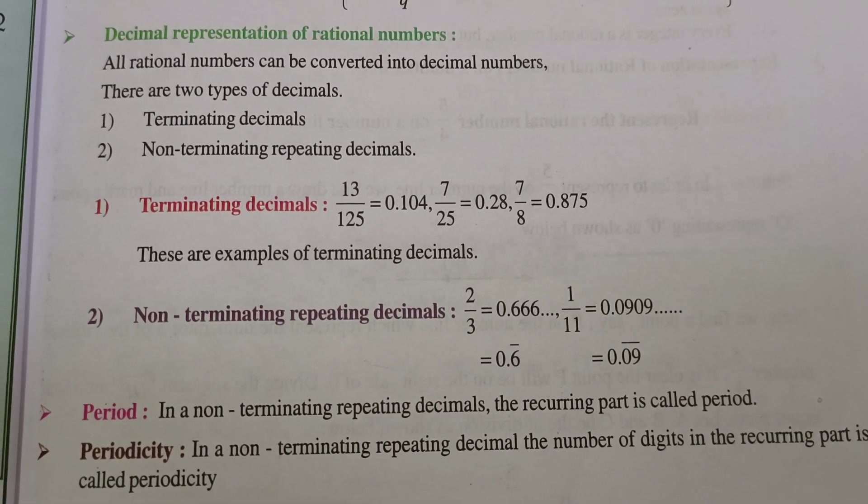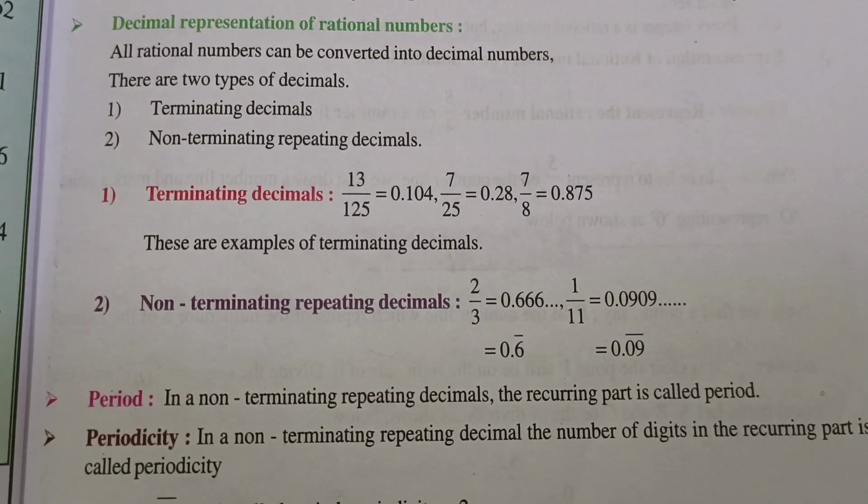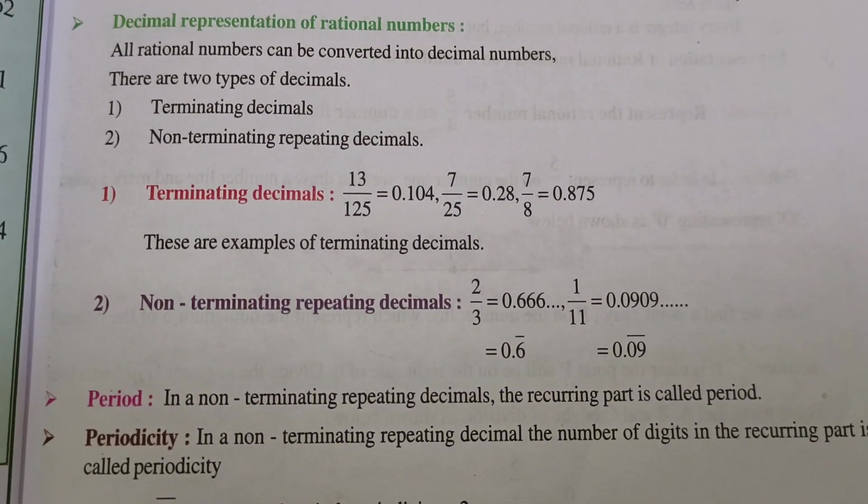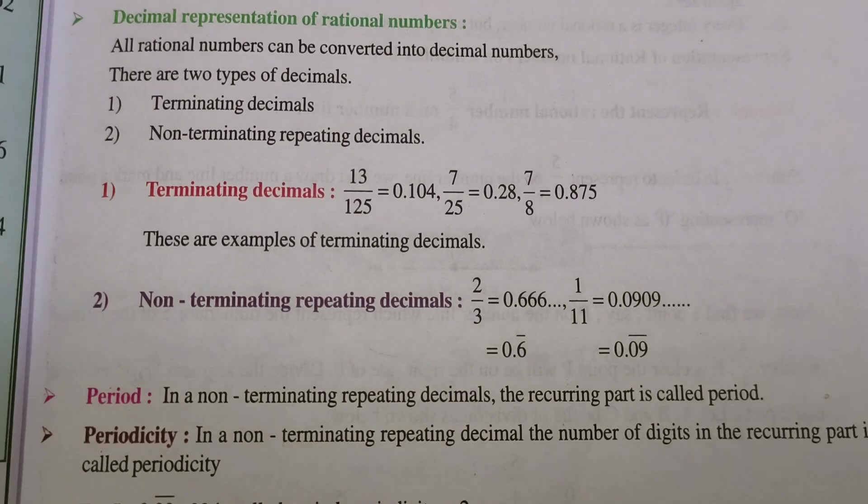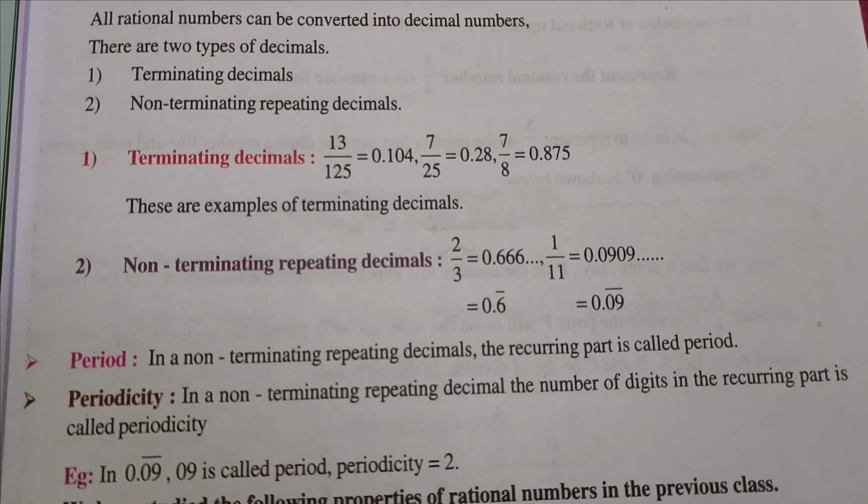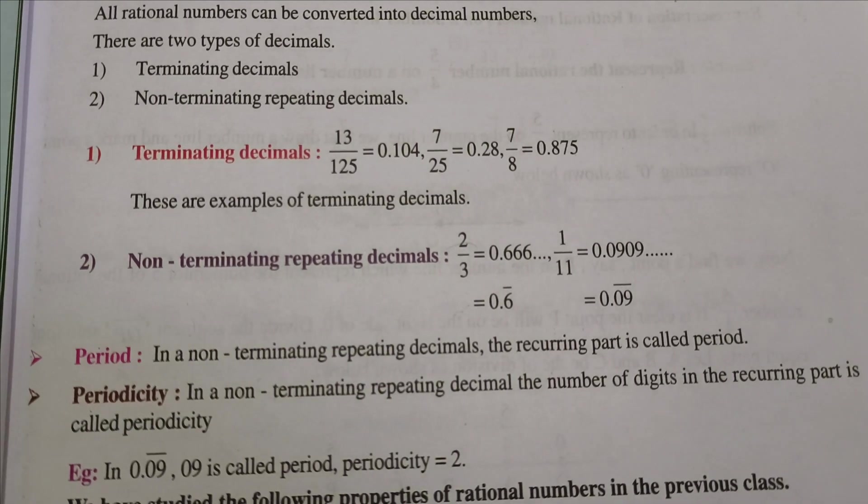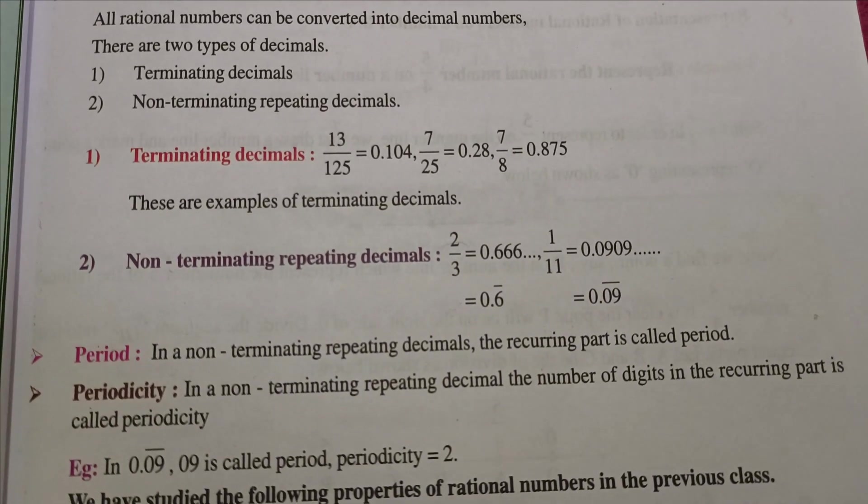Now we are going to learn about period. In a non-terminating repeating decimal, the recurring part is called period. Periodicity: in a non-terminating repeating decimal, the number of digits in the recurring part is called periodicity.